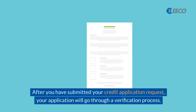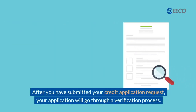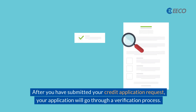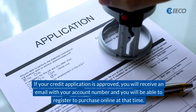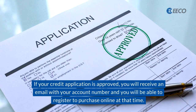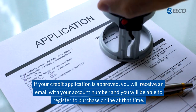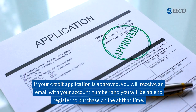After you have submitted your credit application request, your application will go through a verification process. If your credit application is approved, you will receive an email with your account number and you'll be able to register to purchase online at that time.